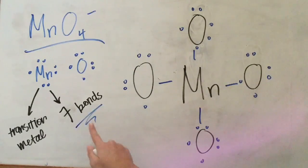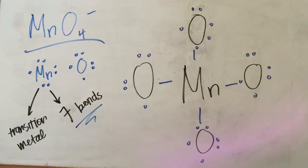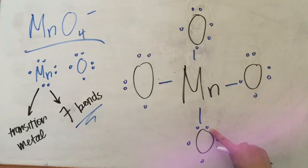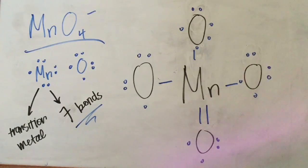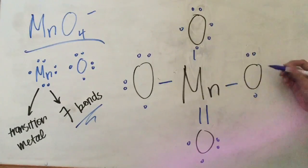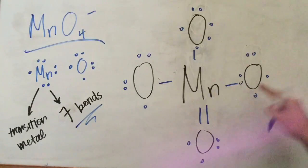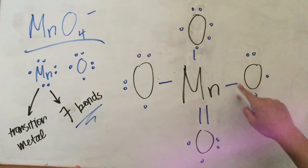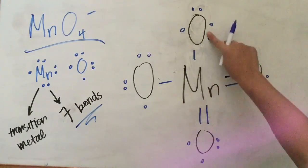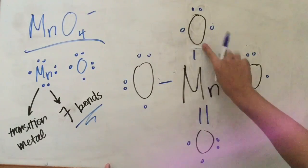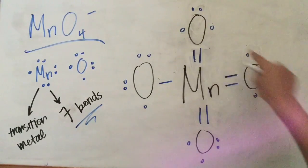Because there are 7 bonds that need to satisfy this molecule and we only have 4, we're going to have to change the valence electron pairs around to create double bonds. With this pair of valence electrons already on the bottom oxygen, this can form into a bond between manganese and oxygen, creating a double bond. Moving on to the next oxygen atom, I'm going to switch the pair of valence electrons that sit inside and the single valence electron to the outside. This pair of valence electrons can now form a bond between manganese and oxygen, which creates a double bond. I'll do the exact same to the top oxygen atom to form another double bond. Now we have 7 bonds and the molecule is satisfied.